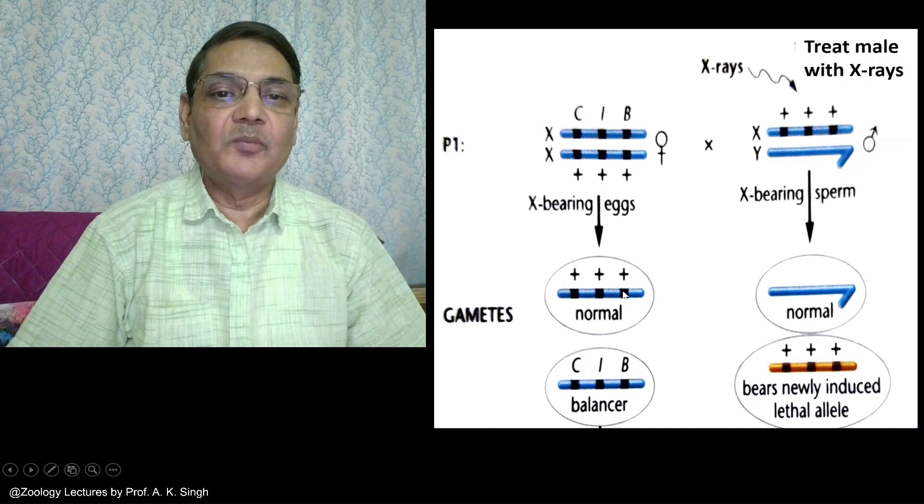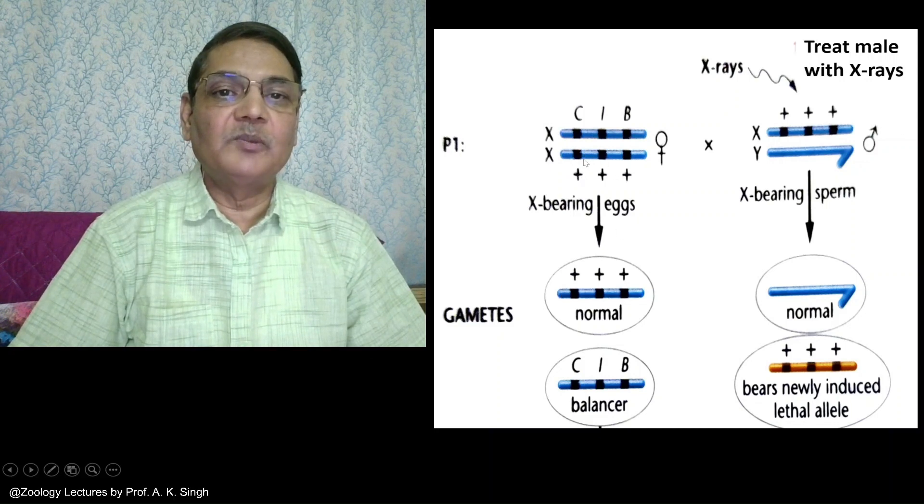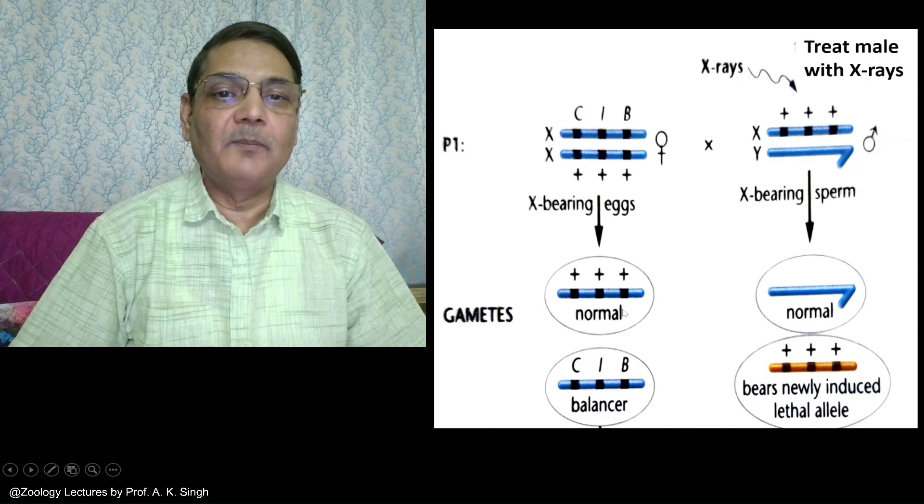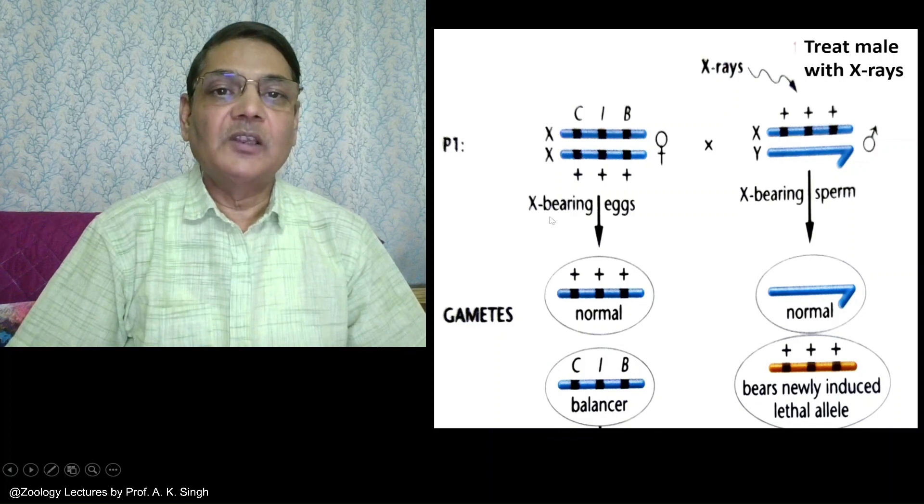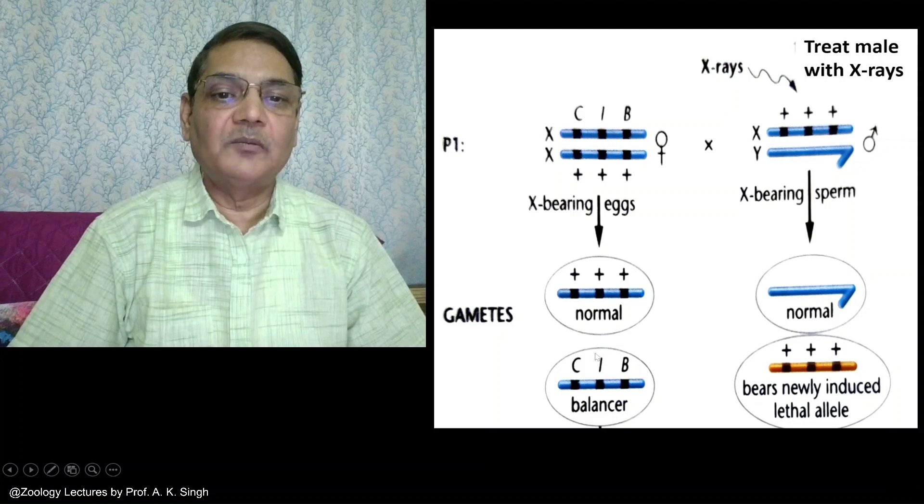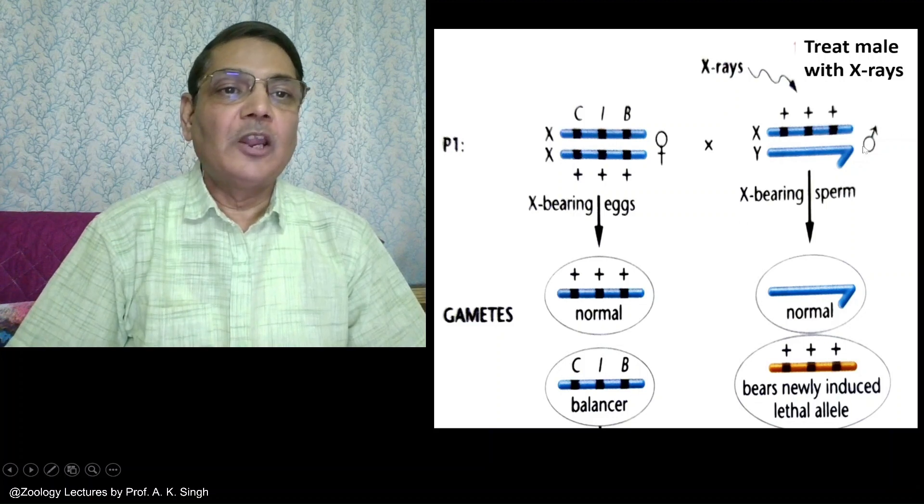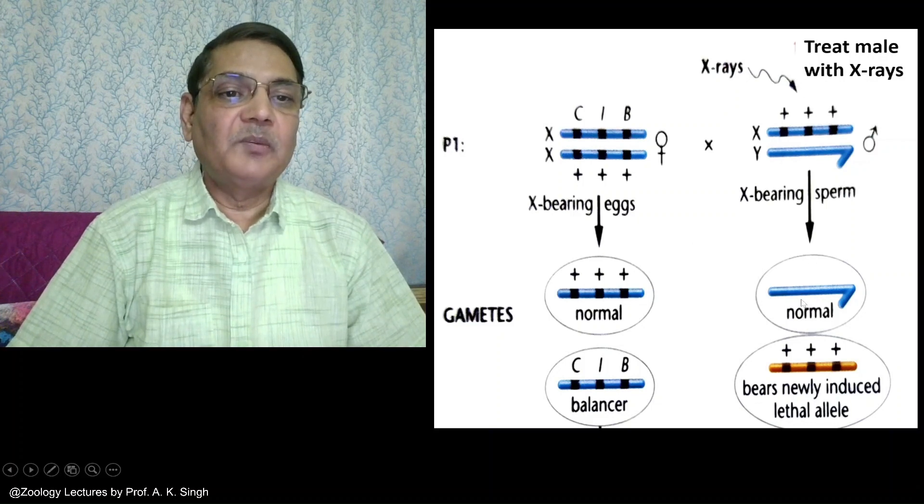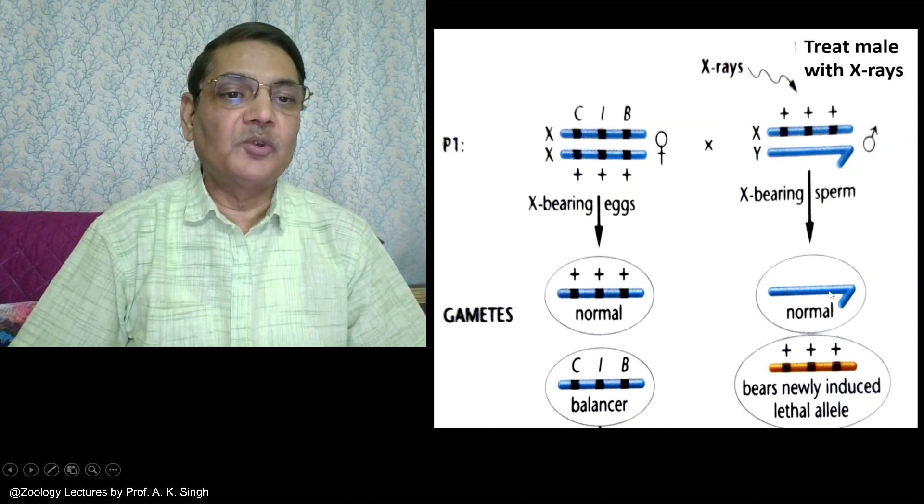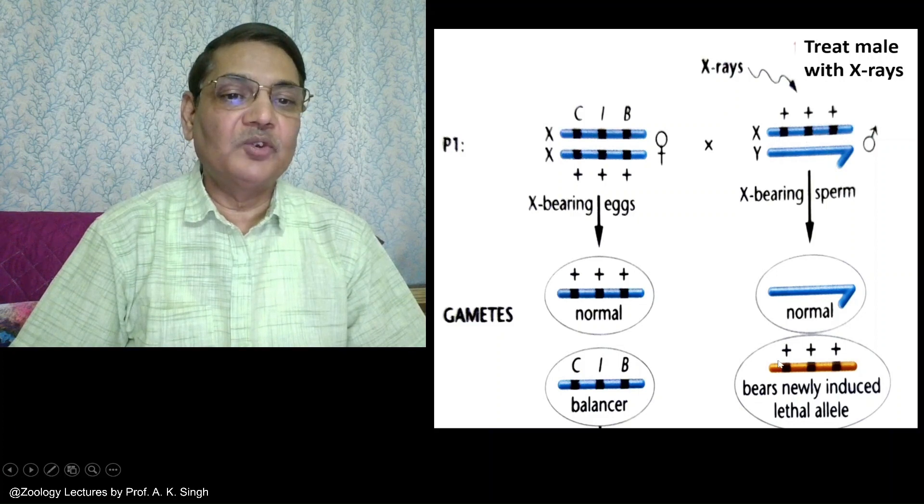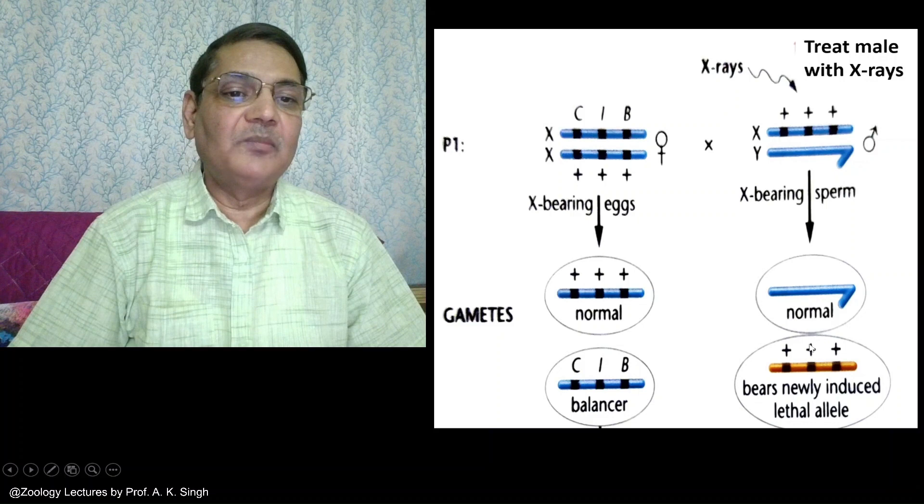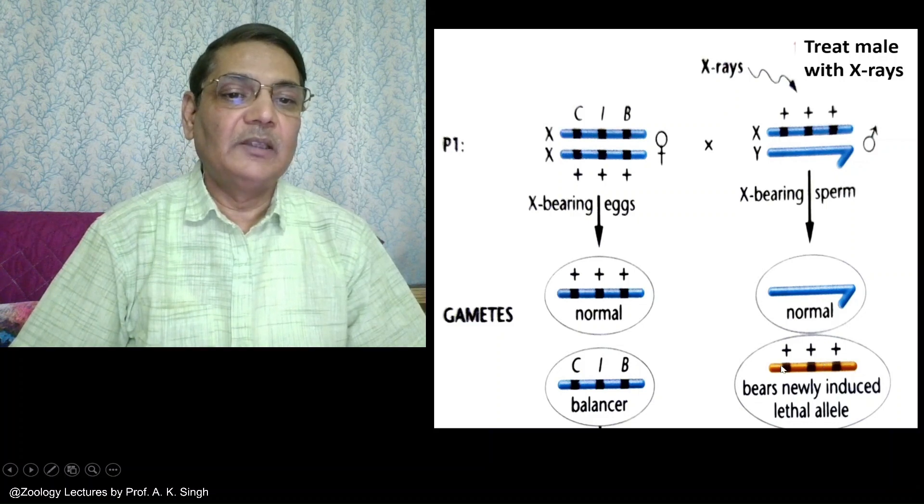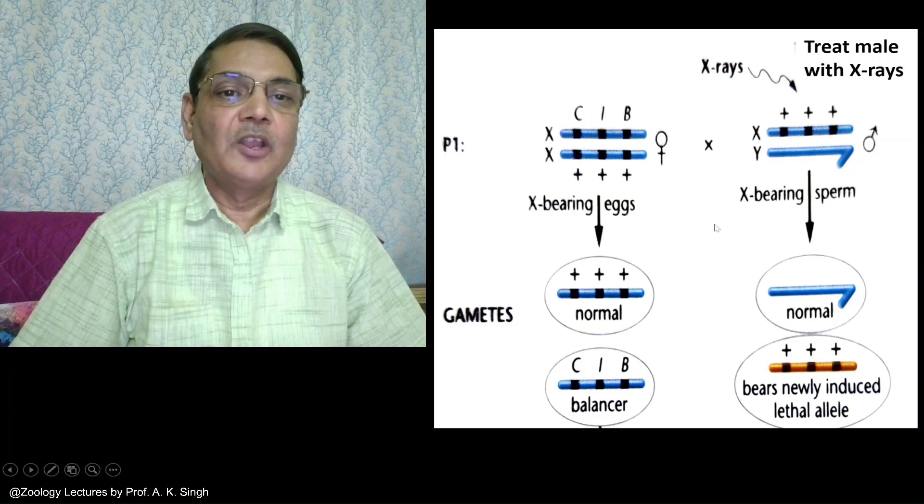In the cross, this CLB female and this normal male which carries normal alleles on its X chromosome will be crossed. The male will be treated with X-rays and then gametogenesis will occur. The female will form two types of gametes: one X chromosome with normal alleles and the other with CLB. Males exposed to X-ray will form 50% spermatozoa with Y chromosome and 50% with the X chromosome which might have developed lethality due to X-ray exposure.